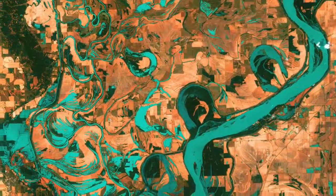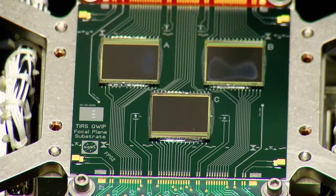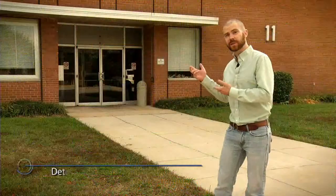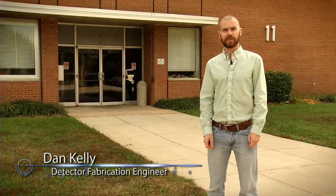And behind these images lies QUIP, the Quantum Well Infrared Photo Detector, which is processed here in the Detector Development Lab at NASA Goddard. Similar to the sensor in your digital camera or your cell phone, the QUIP detector is designed to be more sensitive and to detect specific wavelengths. Let me show you how these high-end detectors are created.